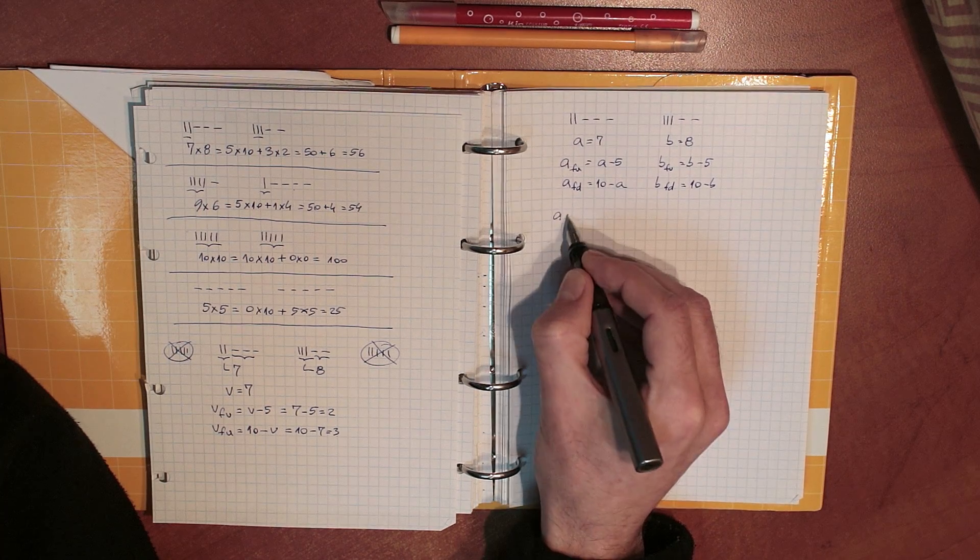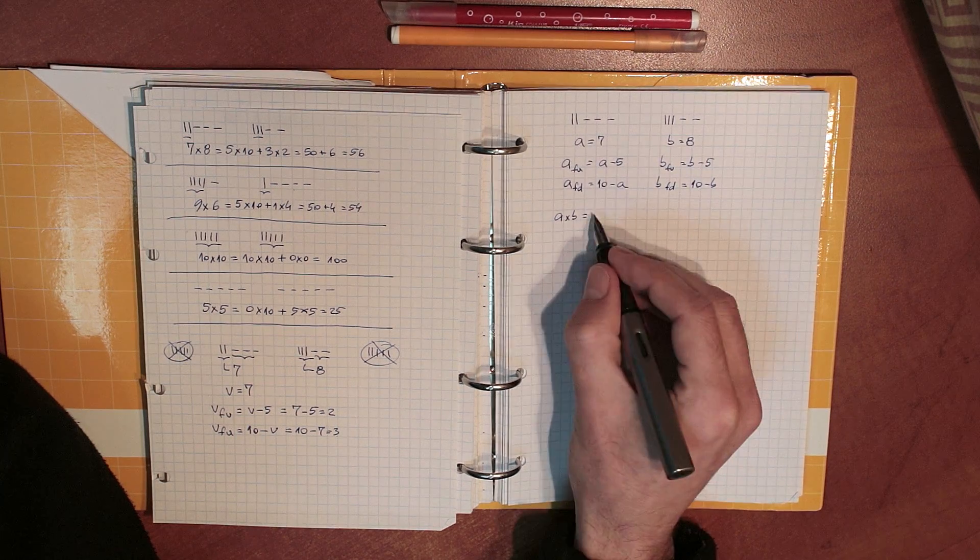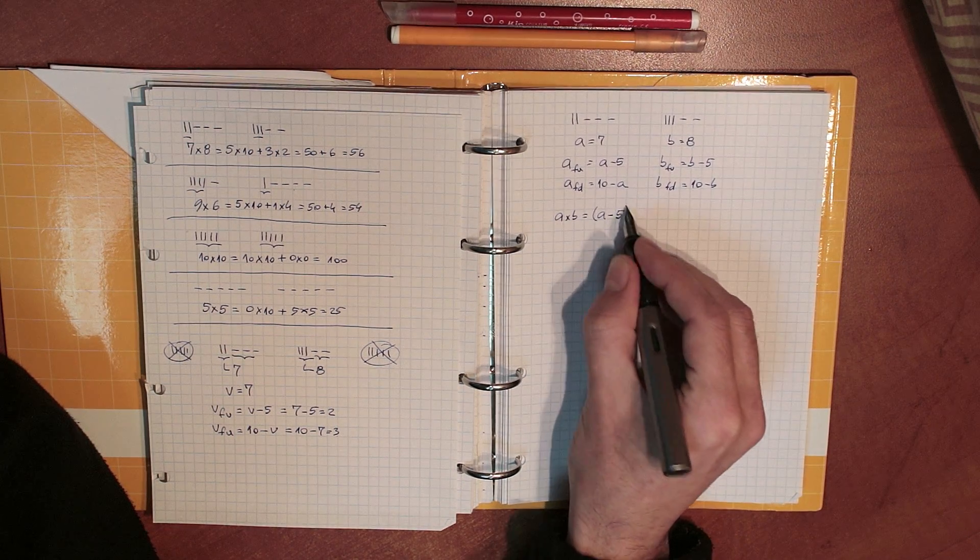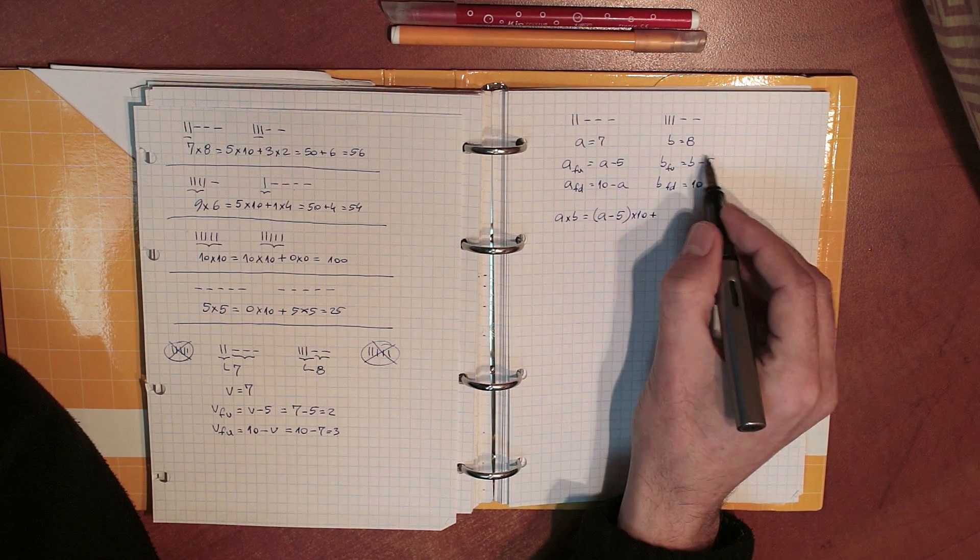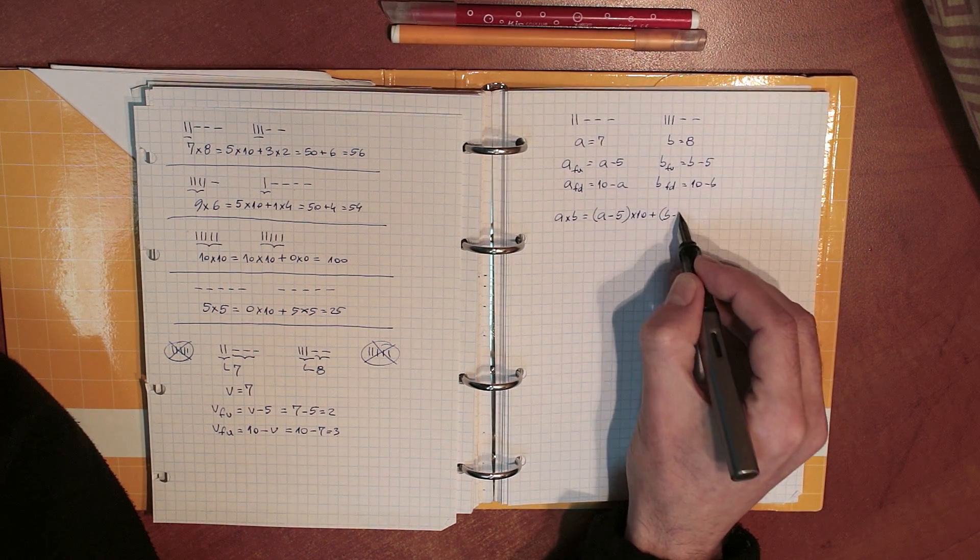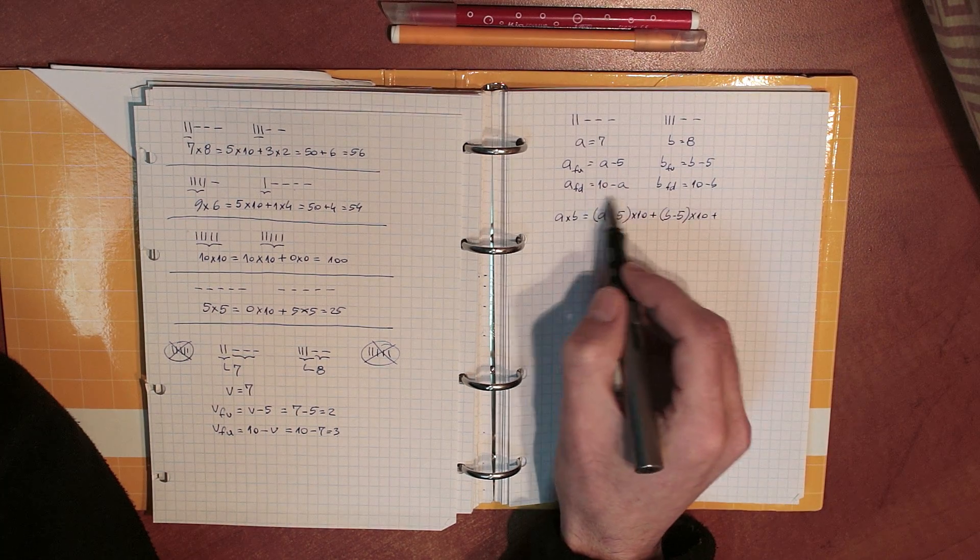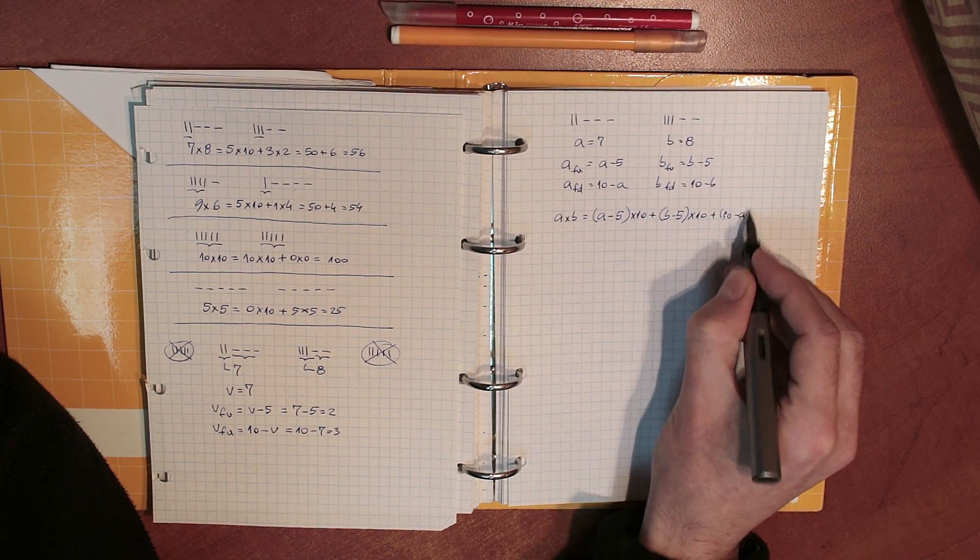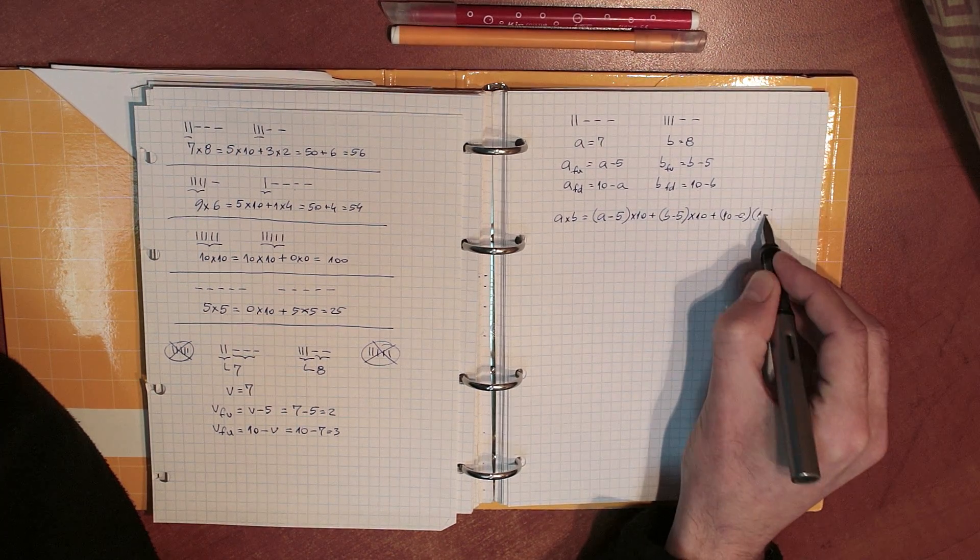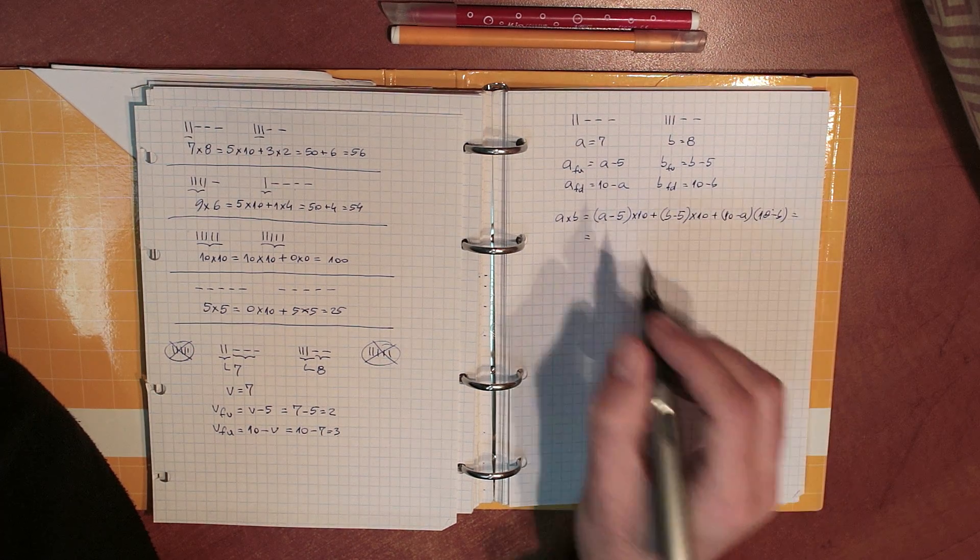Well, I said that A times B is the number of fingers up on my left hand, which is A minus 5, times 10, plus the number of fingers up on my right hand, which is B minus 5, times 10, and then I multiplied together the number of fingers down on my two hands, which is 10 minus A times 10 minus B.